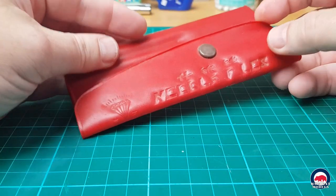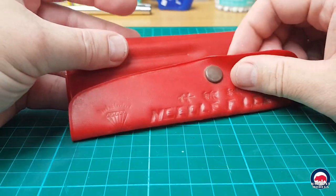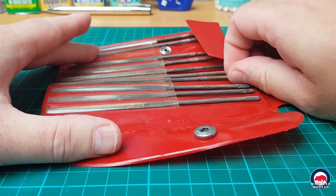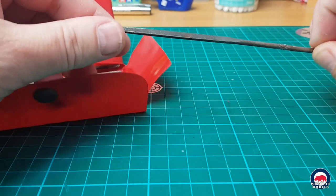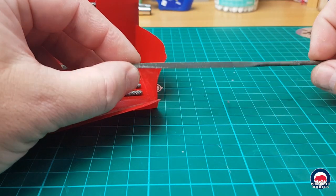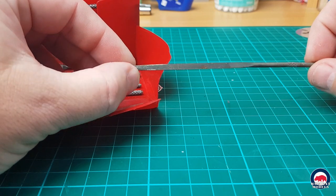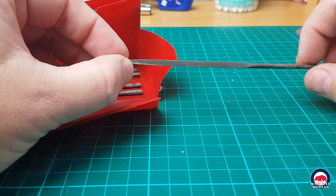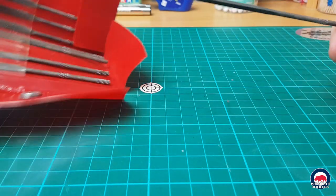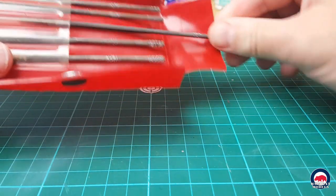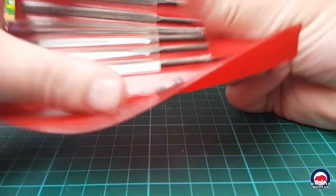Then we've got files. Now this set of needle files, I've got no idea how long I've had them or where I got them from. They come in a range of sizes and shapes. They're really useful for cleaning up sprue nibs, and also great for cleaning up the little leftover nibs from where you've cut PE off the fret. And just for general, if you want a nice flat surface when you're cleaning up your parts.